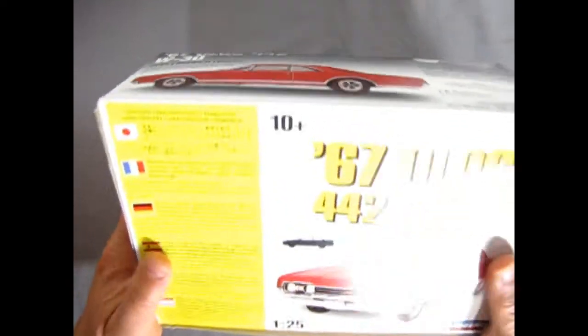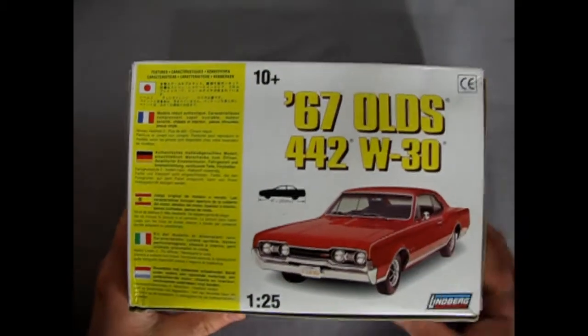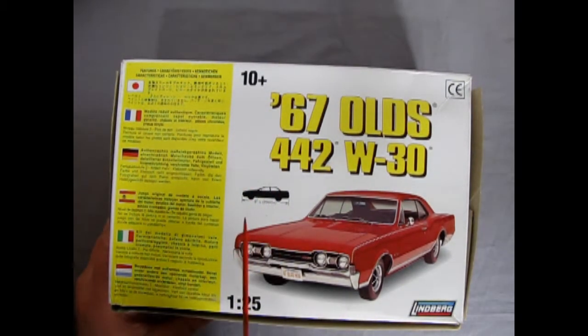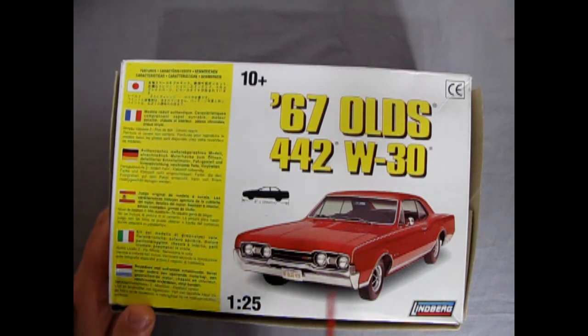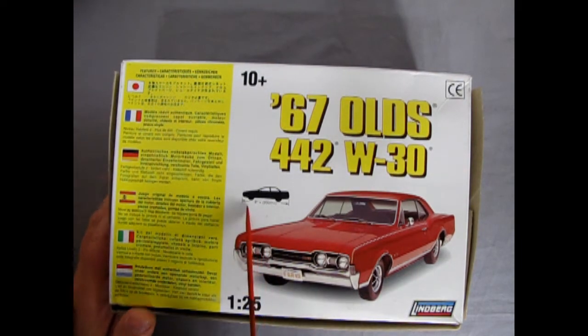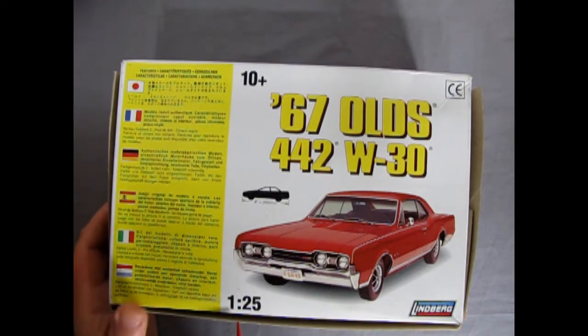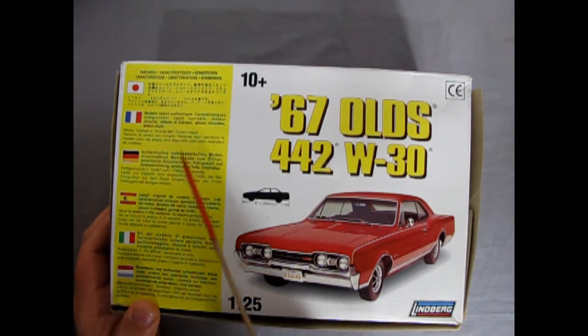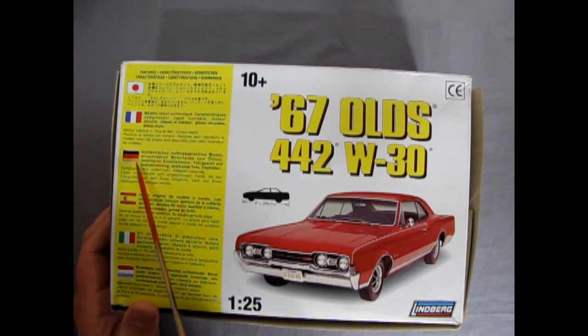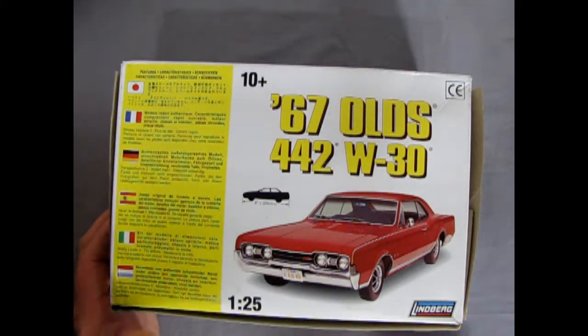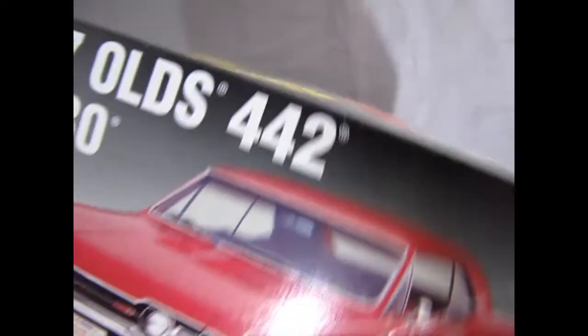And then the bottom of the box actually has some detail to it as well. Ages 10 and up. 8 inches long, it says. And then it shows the car itself. Funny that they used a more modern type of car for the measurements. 1/25th scale, and then we've got Japanese, French, German, Spanish, Italian, and Dutch. Right there for our different flags of the world. And then, of course, the end of the box.